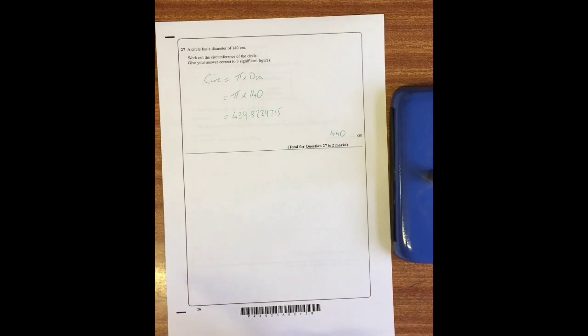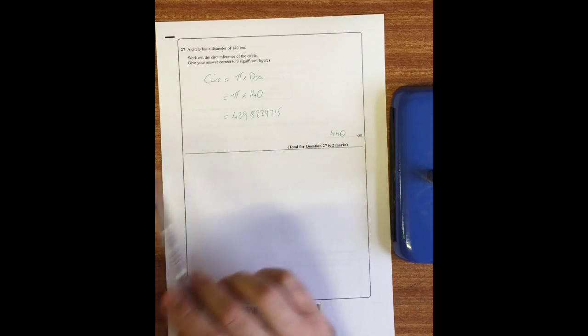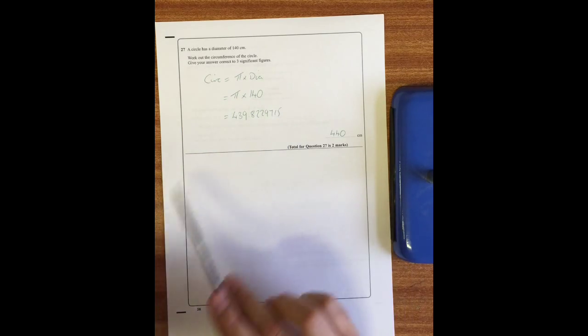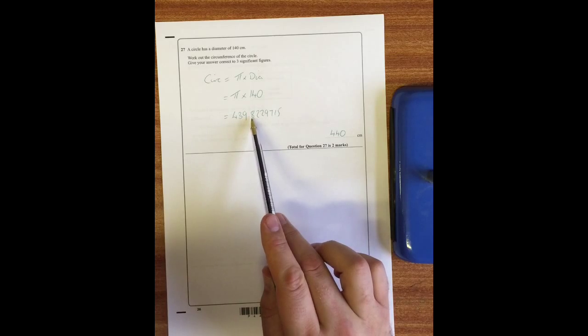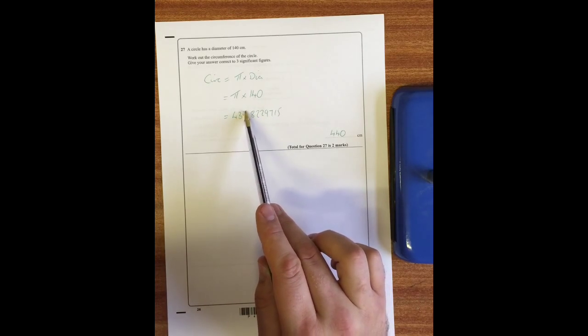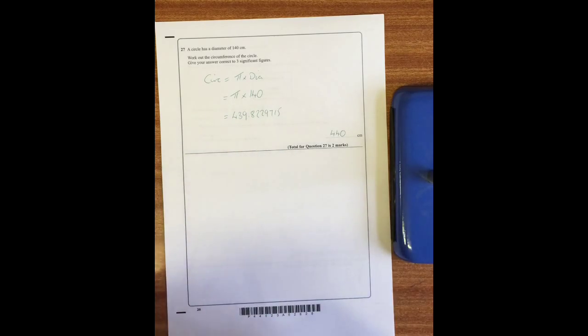Question 27: a circle has a diameter of 140 centimeters. Work out the circumference of the circle. Give your answer to three significant figures. For circumference of a circle you do pi times the diameter, so that's pi times 140 which gives you this, and to three significant figures that would be 440 because the eight rounds the nine up, and then the nine will become - the 39 will become 40 - so 440.